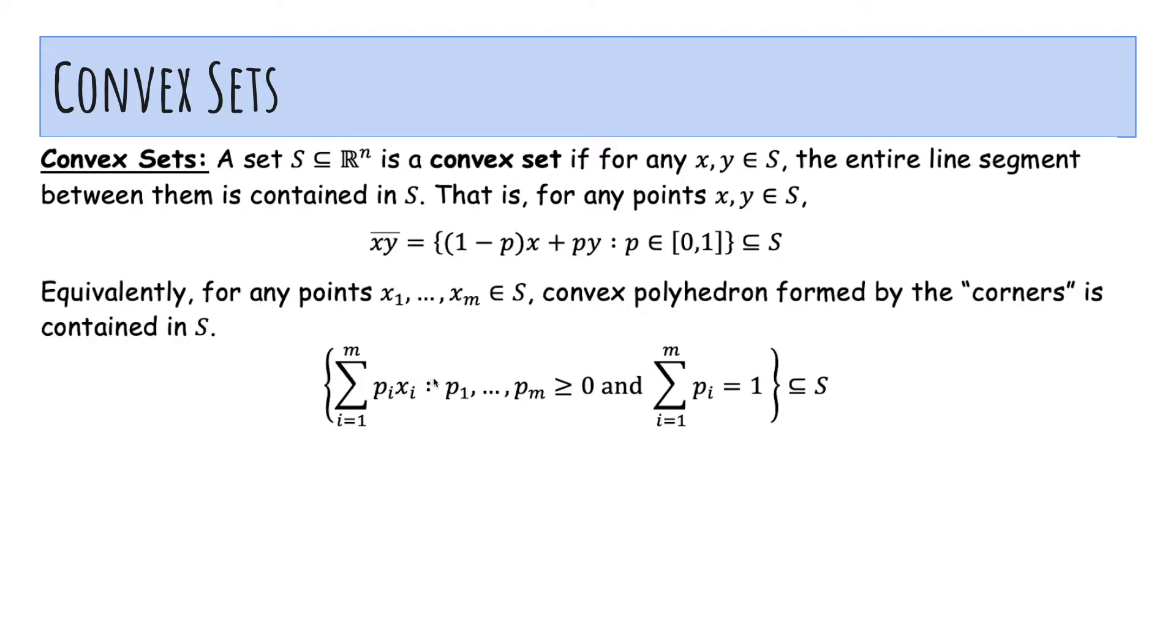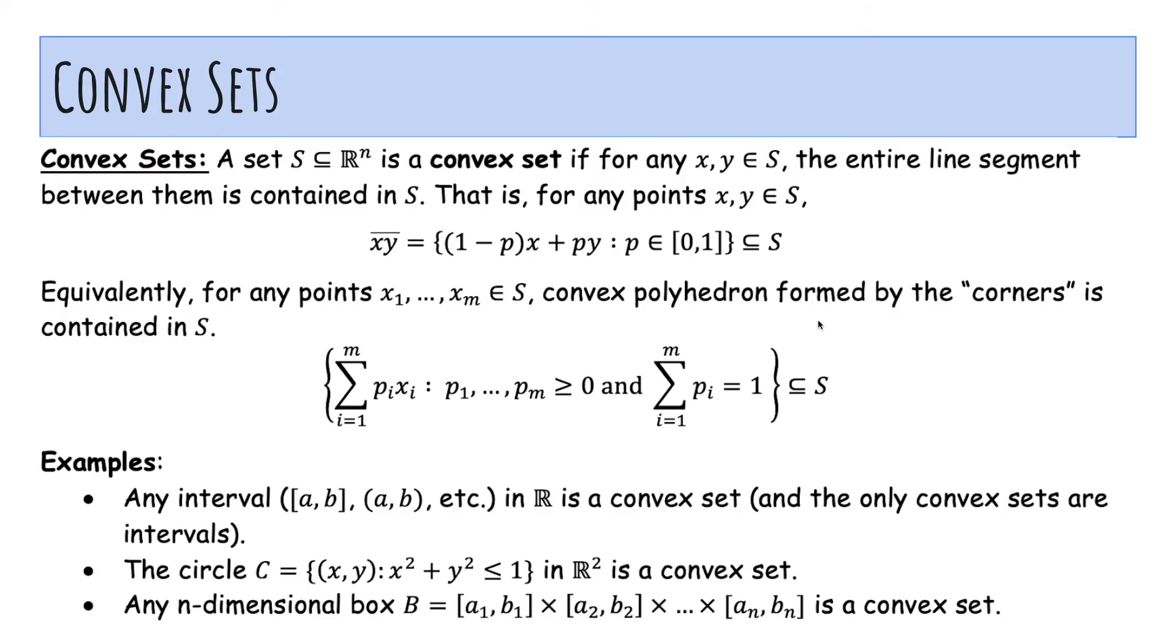And this works for any endpoints. Just like we described earlier, for M equals 3, if I drew the convex polyhedron, that's a complicated word for, for M equals 3, that's a triangle. If I drew the triangle, the entire triangle would lie inside the convex set. Examples of convex sets: the interval in R, because if you take an interval and take any two points between the endpoints, then you draw the entire line. The line segment will always be contained in the interval. For a circle in R2, if you draw any two points, the entire line segment will be contained inside the circle in any n-dimensional box.